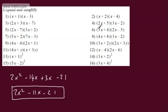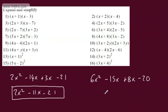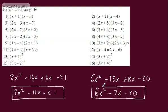Let's look at 3x plus 4 multiplied by 2x minus 5. 3x multiplied by 2x gives us 6x squared. 3x multiplied by minus 5 gives us minus 15x. Positive 4 multiplied by 2x gives us plus 8x. And positive 4 multiplied by negative 5 gives us minus 20. Tidying this up: 6x squared minus 7x minus 20. That is now simplified — expanded and simplified.